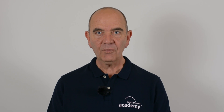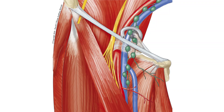Before we palpate in the femoral triangle we have to know the structures there. From medial to lateral are the femoral vein, artery and nerve. In addition we will find lymph nodes which are scattered mainly at the medial part of the triangle.